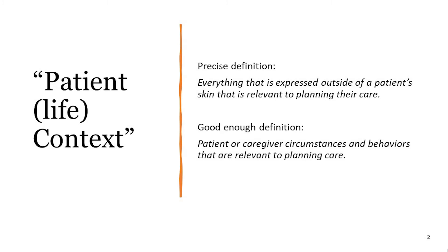Underneath this precise definition, I have what I call the 'good enough' definition: patient or caregiver circumstances and behaviors that are relevant to planning care. You can see how these two are similar. 'Circumstances' covers the stuff literally outside their skin, and 'behavior' refers to the stuff going on inside — emotions, skills, and abilities — that affect how they actually behave in ways directly relevant to planning care. We originally started with the precise definition, but when publishing an early paper, one journal thought the reference to 'outside of the skin' was too unusual, so we came up with this more naturalistic definition, which is pretty close.